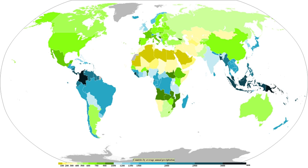Hailstones can grow to 15 cm and weigh more than 500 g. In large hailstones, latent heat released by further freezing may melt the outer shell of the hailstone. The hailstone then may undergo wet growth, where the liquid outer shell collects other smaller hailstones. The hailstone gains an ice layer and grows increasingly larger with each ascent. Once a hailstone becomes too heavy to be supported by the storm's updraft, it falls from the cloud.